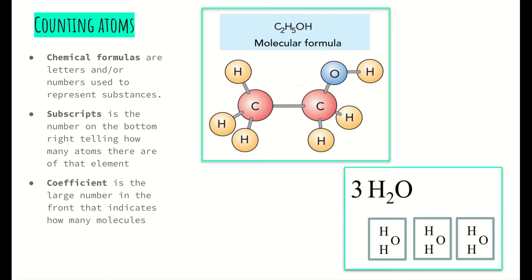A couple of words that we used over and over again were chemical formulas. Those are the letters or numbers used to represent substances. So H2O is a chemical formula for water, CO2 is a chemical formula for carbon dioxide. We looked at C6H12O6, which is the chemical formula for glucose — that's what plants make during photosynthesis.